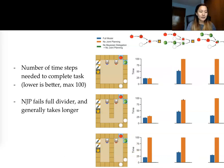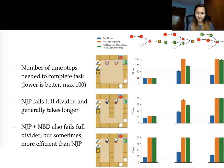Notably, the no joint planning lesion fails on completing the full divider because it's unable to coordinate actions between each of the agents.